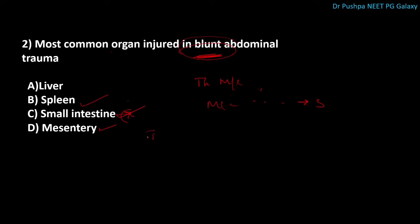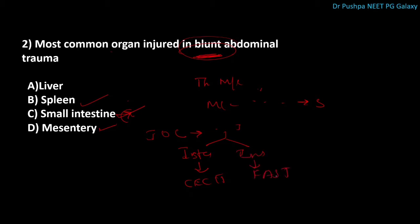Regarding investigation of choice in blunt abdominal injuries — there are two varieties. In stable patients, the investigation of choice is CECT. In unstable patients, the investigation of choice is FAST. FAST stands for Focused Assessment with Sonography in Trauma. The advantage of FAST is it takes around 3 to 5 minutes to perform and can detect a minimum fluid collection of 100 cc.